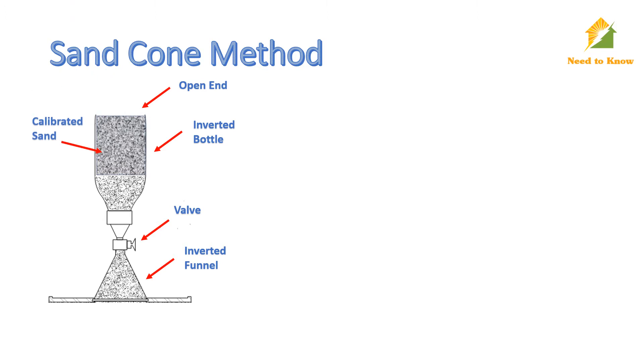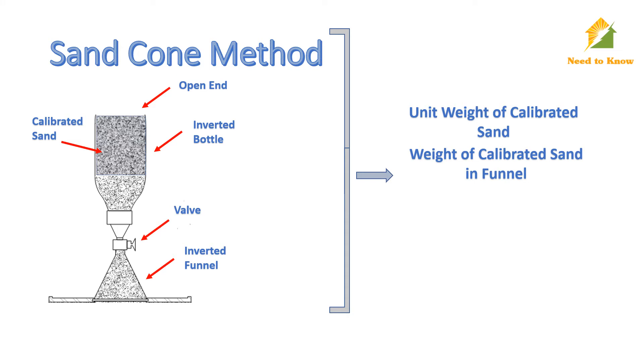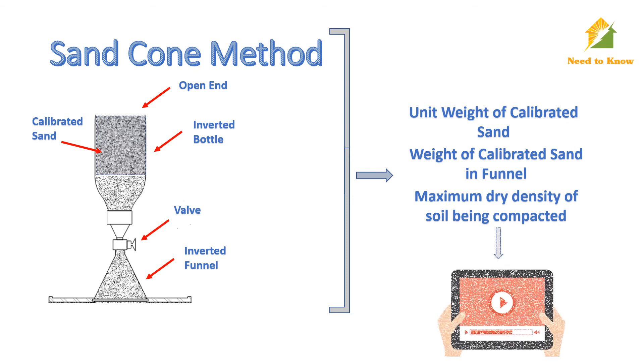To use this method for measuring compaction, we need to measure the following values before going to site: unit weight of calibrated sand, weight of calibrated sand in the funnel, and the maximum dry density of soil being compacted. We will continue with the first two points. The third point will be explained separately in the coming video on standard proctor test.